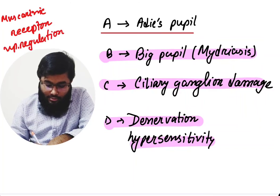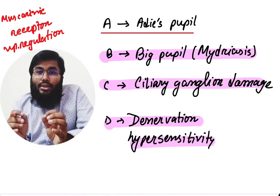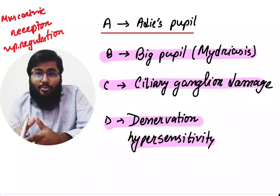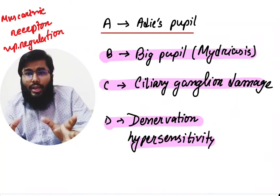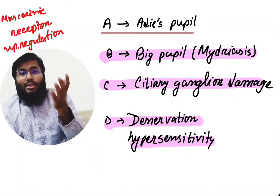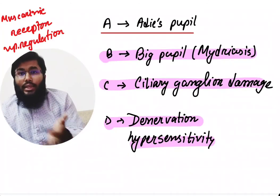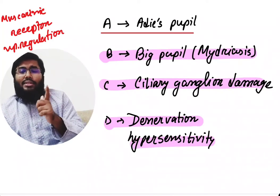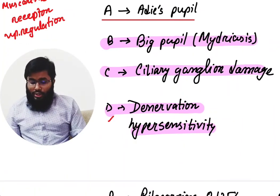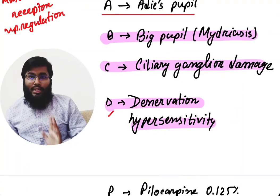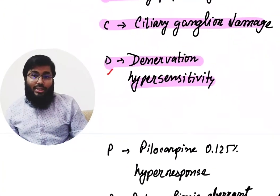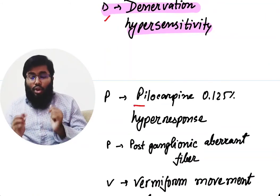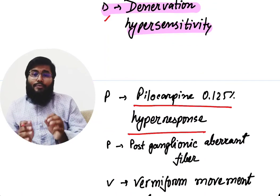Muscarinic receptor upregulation will cause more stimulation in response to less stimuli — this is called denervation hypersensitivity. When you cut off a nerve supply to any area, it causes the receptors to be upregulated, increasing their number and sensitivity. This causes a mild stimulation to produce a bigger response. Denervation hypersensitivity occurs here and in many other conditions as well.